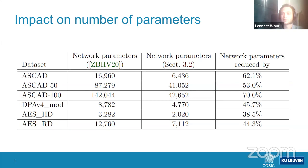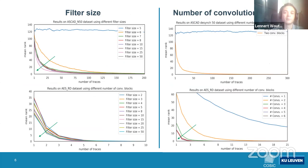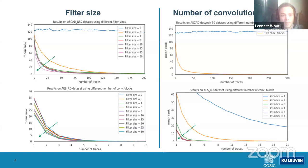Removing the first convolutional block also reduces network complexity: our networks have at least 50% fewer parameters than the original models. We also explored different filter sizes and numbers of convolutional blocks. In contrast to Zaid et al., who reduce filter size and number of blocks, we propose increasing both to enlarge the receptive field and obtain more stable results.